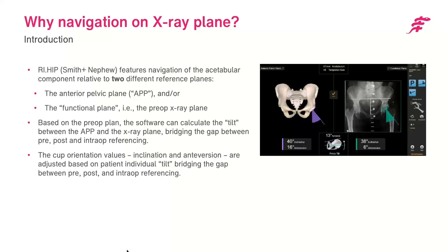The reason we use this is that changes in pelvic tilt change the axis we work around, so we want to be consistent in defining inclination and version and in what reference frame. We want to target cup position based on the desired plane — whether relative to the functional supine plane or functional standing plane. There is still a lot to be learned about how we improve total hip stability, and this tool allows us to be very specific about which plane we're referencing, facilitating research to help refine improving patient stability in total hip replacements.